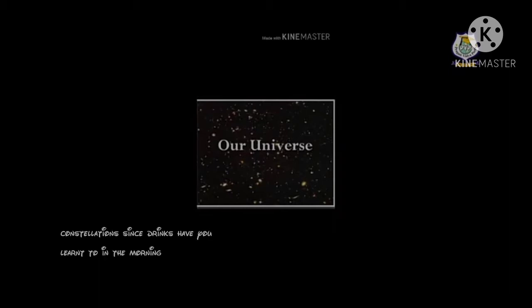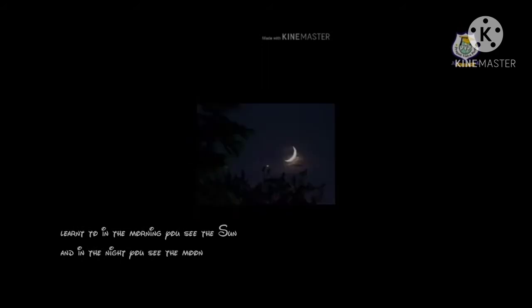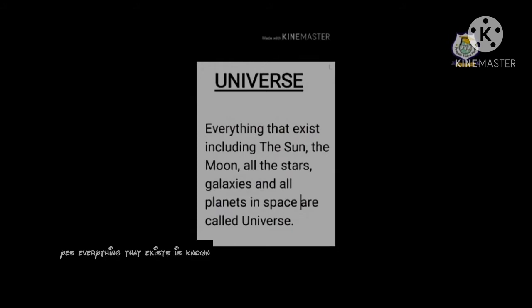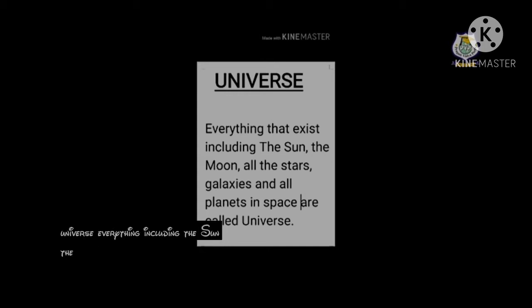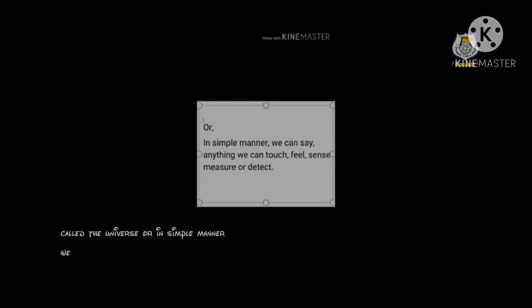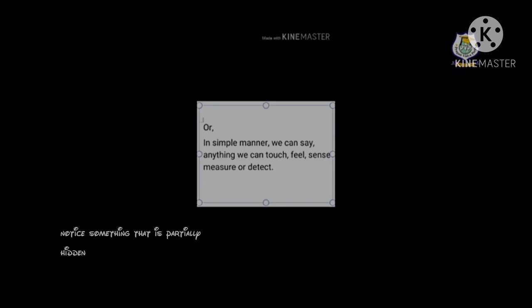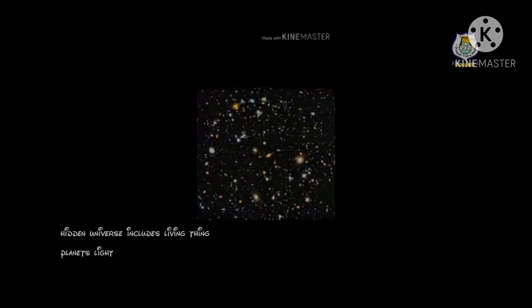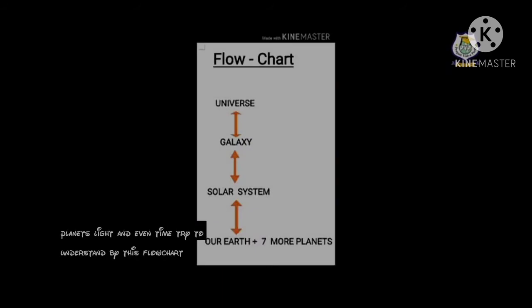You see the sun, the moon, and the stars twinkling. Everything that exists is known as the universe. Everything includes the sun, the moon, the stars, the solar system, the space — even you, pen, pencil, books, everything around us is called the universe. In simple terms, anything we can see, touch, feel, sense, or detect — including living things, planets, light, and even time.